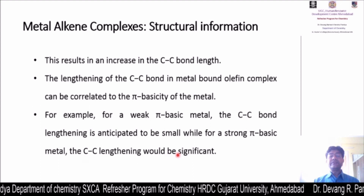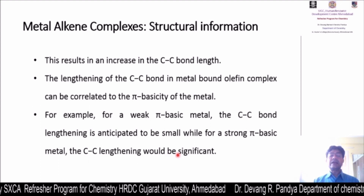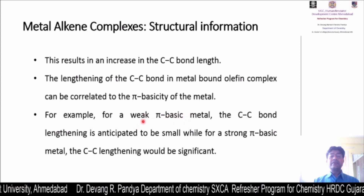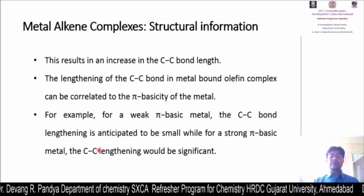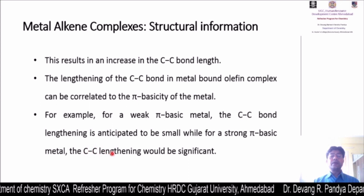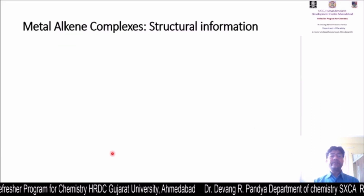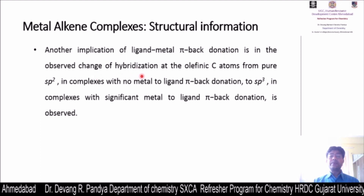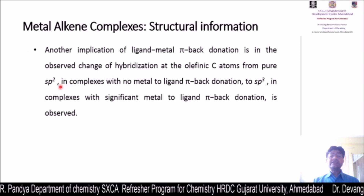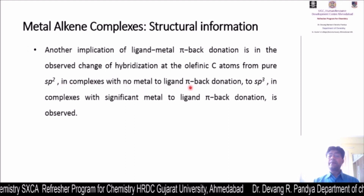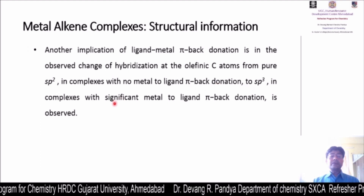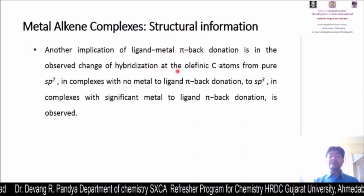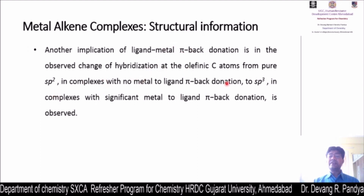There are factors which affect carbon-carbon bond lengthening. One is the basicity of the metal: if the metal is more pi-basic, a significantly greater lengthening of the carbon-carbon bond length is anticipated compared to a low-pi-basic metal. Another effect of ligand-metal pi back-donation is a change in hybridization at the olefinic carbon - from pure sp2 in complexes with no metal-to-ligand pi back-donation, transferred toward sp3 in complexes with significant metal-to-ligand pi back-donation.